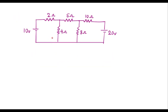Here we can observe that we have one node here and one node here. Let me assume voltage at this node is V1 and voltage at this node is V2. Let me also assume that current in this branch is I1, current in this branch is I2, current in this branch is I3, current in this branch is I4, and current in this branch is I5.